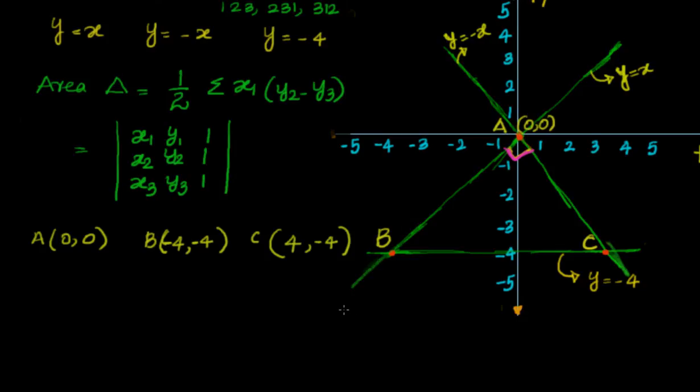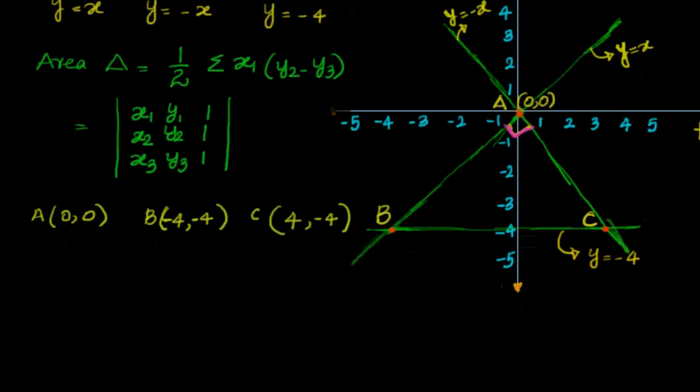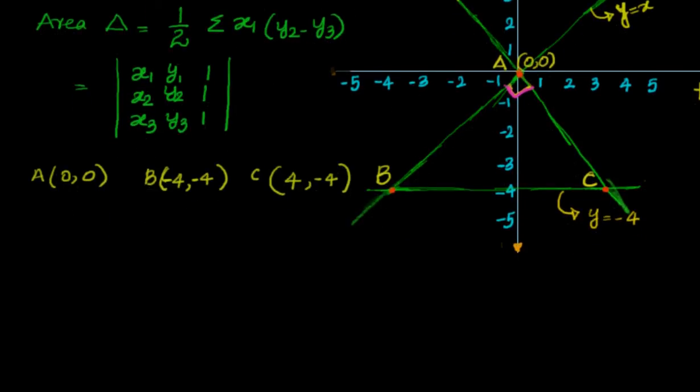So now we got the coordinates of the vertices of this triangle: that is 0, 0, minus 4, minus 4, and C is 4, minus 4. Once we arrive at that we can directly apply the formula.